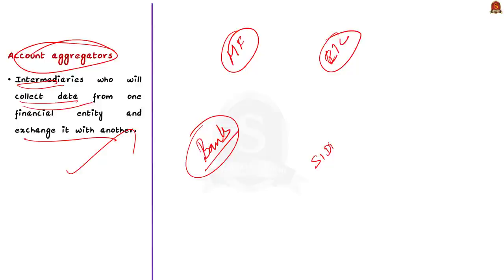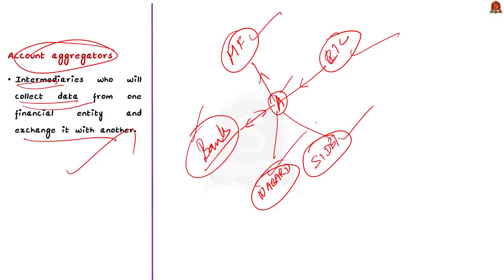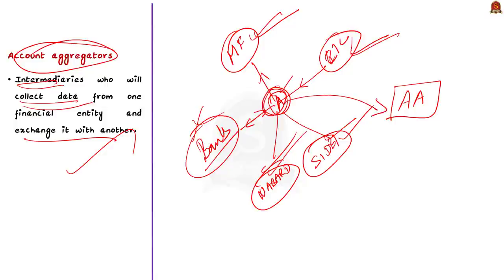A person may take insurance from LIC, invest in mutual funds, take loans from a bank, or engage with SIDBI and NABARD. So a person's financial transactions are widespread across banks, LIC, mutual funds, and SIDBI/NABARD. What account aggregators do is connect the dots — they take the financial transactions from mutual funds, LIC, SIDBI, and the bank at a single point. This is the function of an account aggregator.